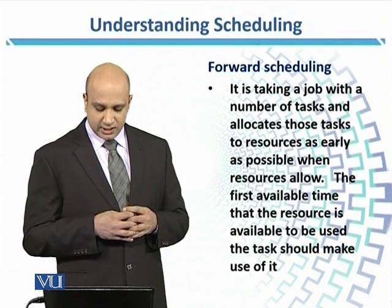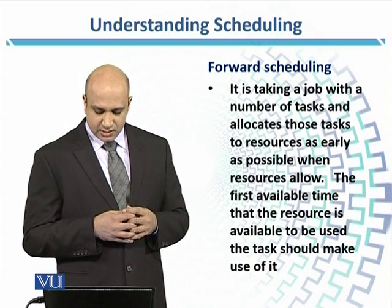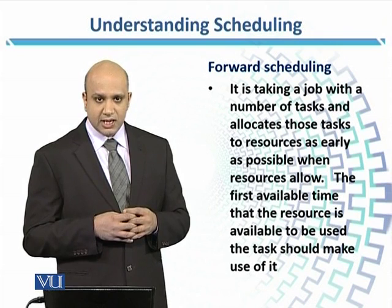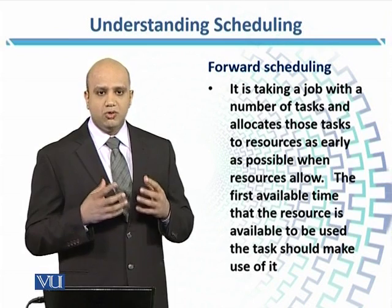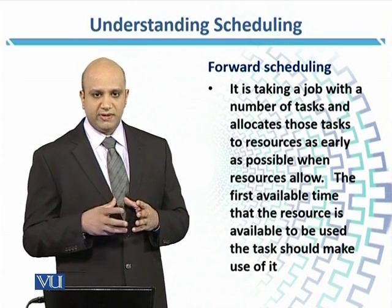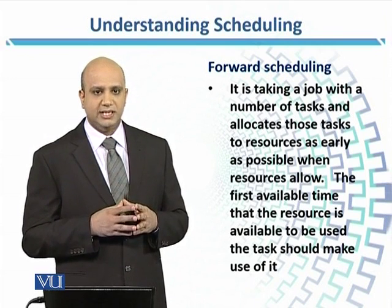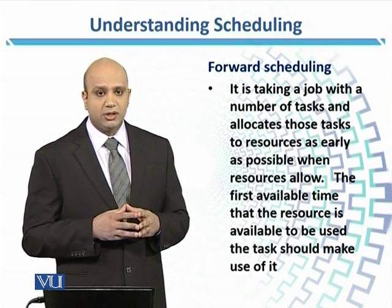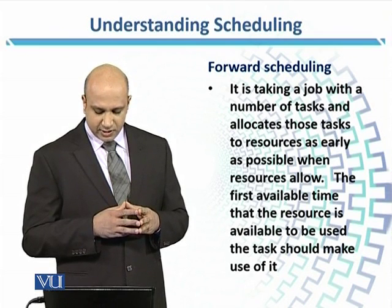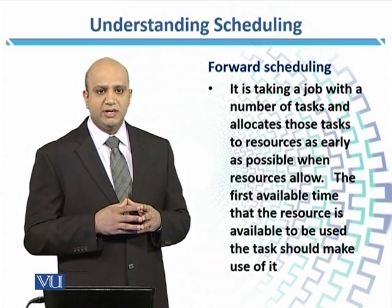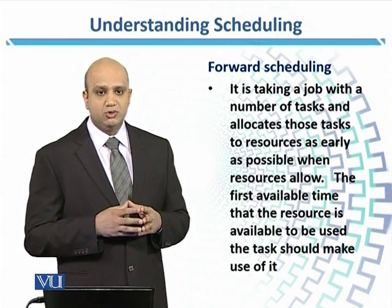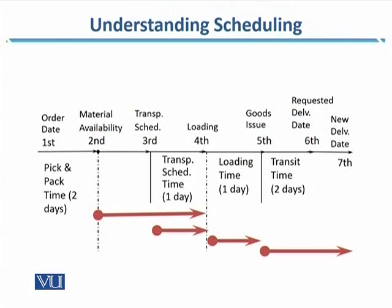The second type of scheduling is called forward scheduling. In this, it is taking a job with a number of tasks and allocating those tasks to resources as early as possible when resources allow. You know and understand how many tasks there are, and you are also aware of the resources available in the organization. You are allocating dynamically depending on when those resources are available to be mobilized to complete those tasks. The first available time that a resource is available to be used, the task should make use of it. In this case, the customer gives you the option of when you can deliver the item — if the customer has no preference and says, 'I have requested the item, now you tell me when you are going to deliver it.'